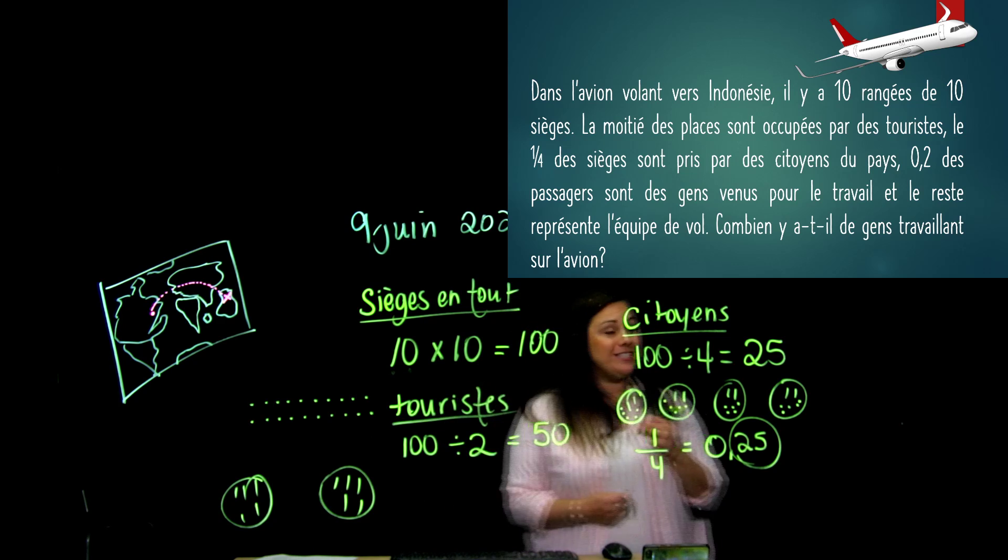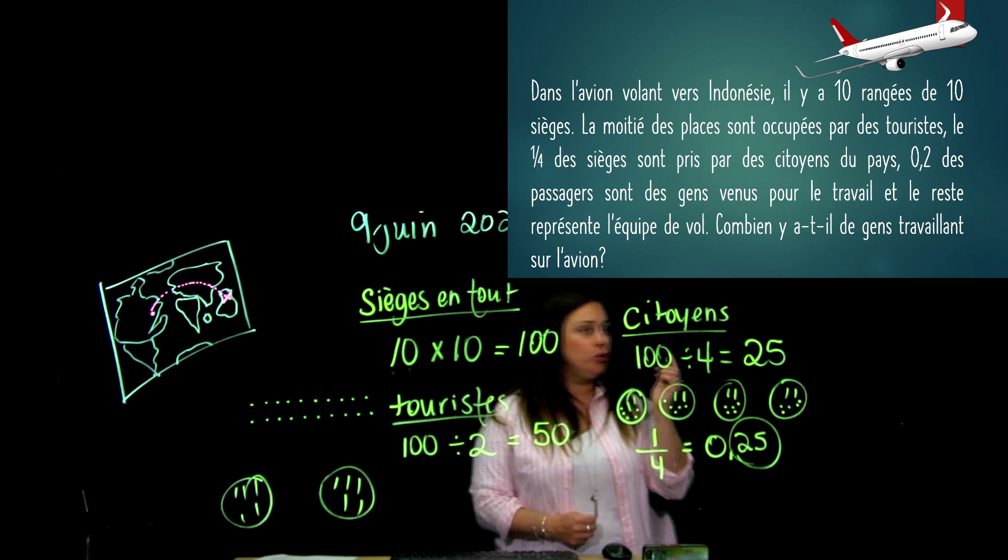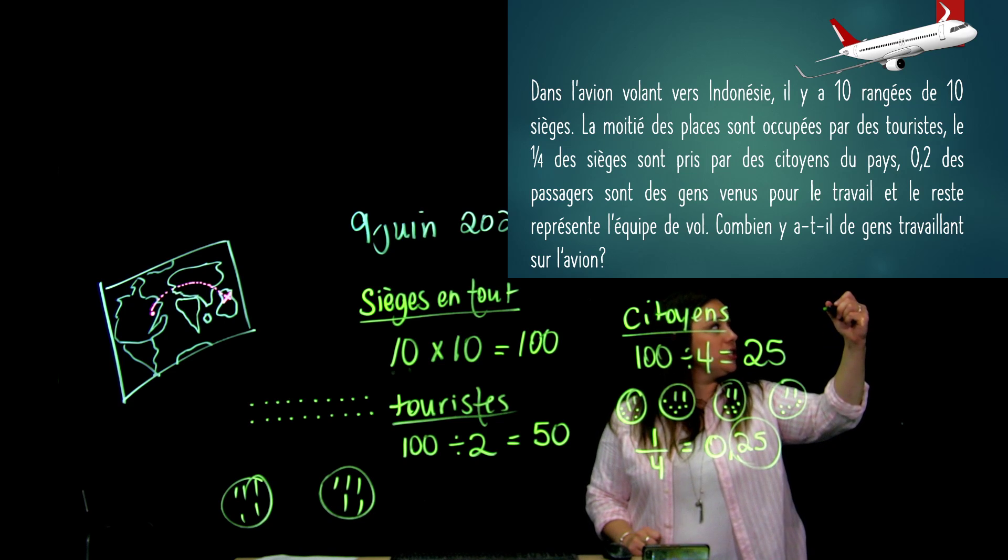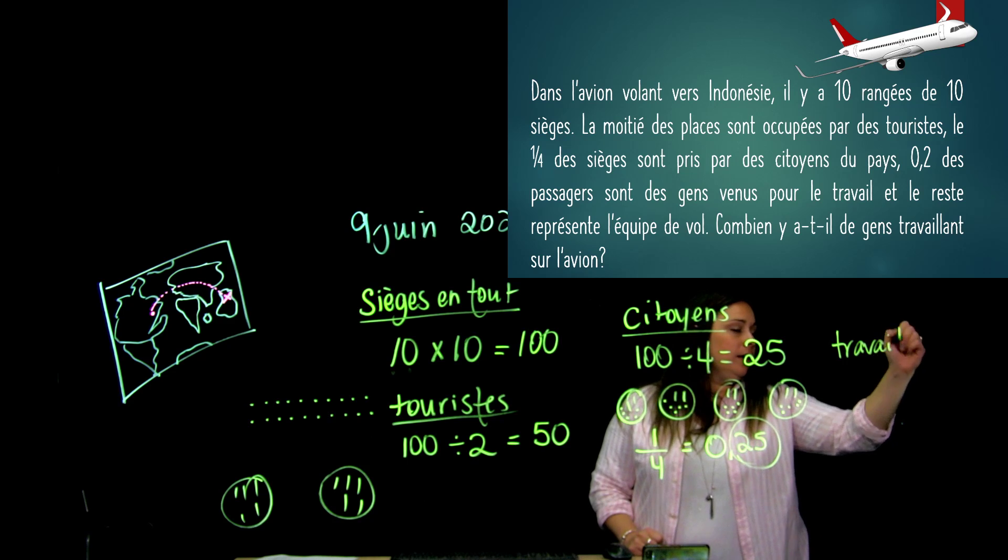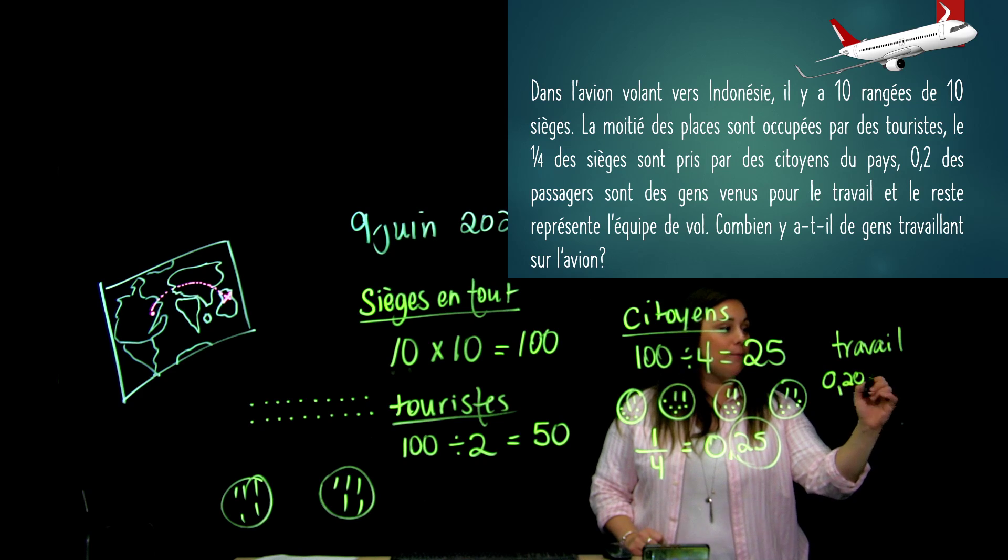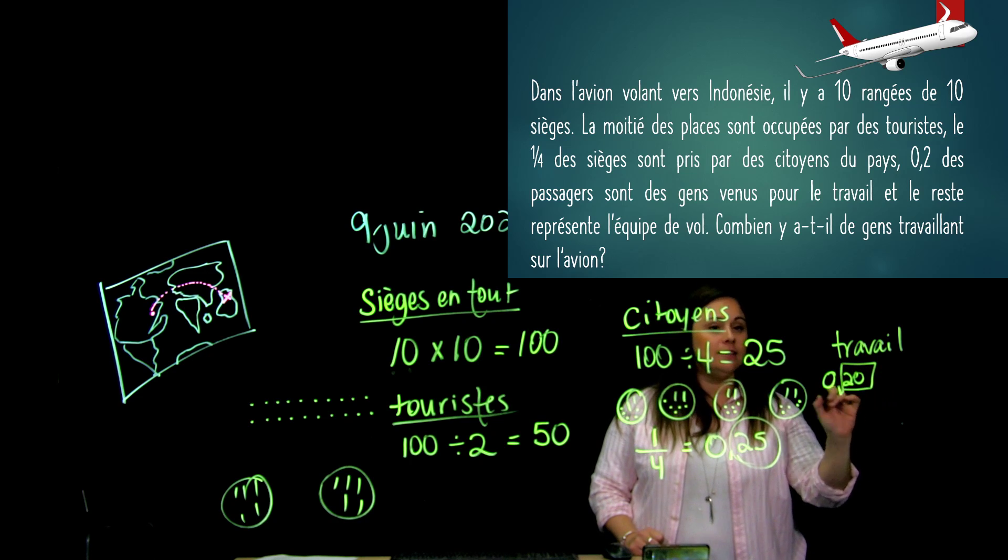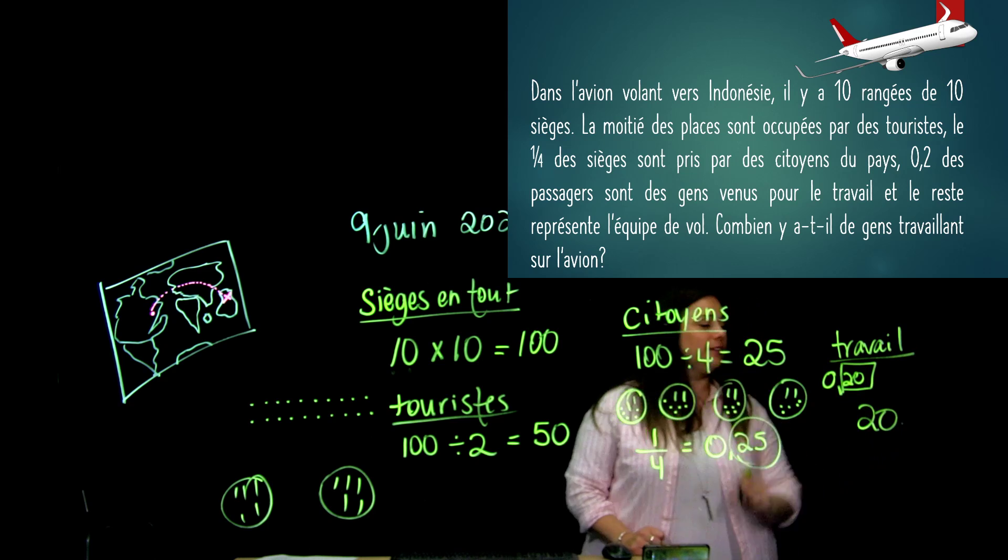0,2, alors ça, c'est deux dixièmes. Deux dixièmes, c'est quoi ce deux dixièmes? On va aller voir les passagers qui sont venus pour le travail. Je vais écrire ça ici. Alors, c'est quoi ce 0,2? Je t'ai dit de l'apprendre par cœur. C'est donc, tu vois, j'ai rajouté un zéro pour dire que c'est 20 sur 100. Donc, c'est 20. Ceux qui sont venus pour le travail, il y en a 20.